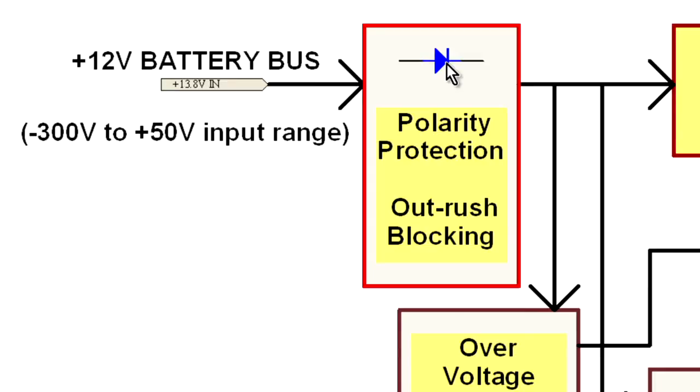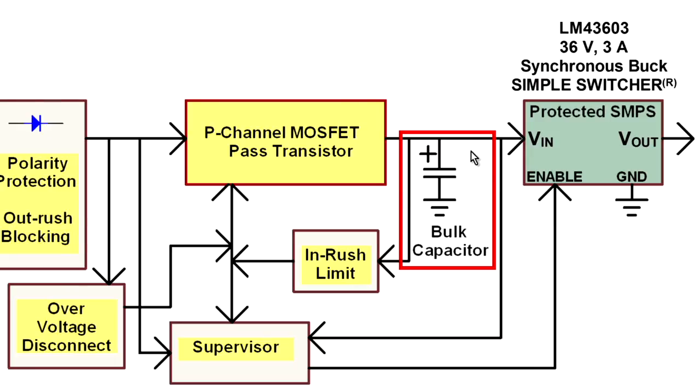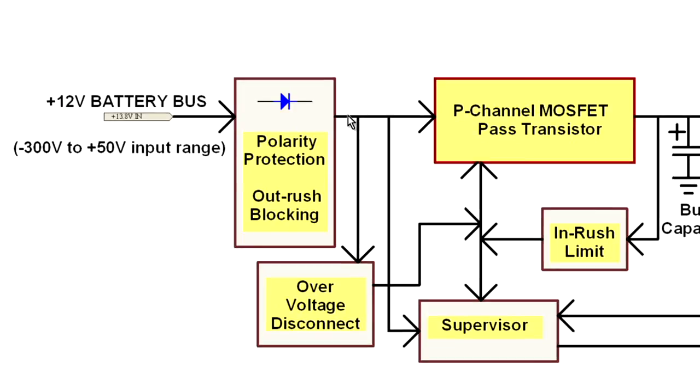The battery bus is here on the left-hand side, and the first device in the application circuit is a polarity guard diode. Now, this is a fast-recovery silicon diode, and it provides polarity protection, of course, but in addition, it's got outrush protection so that the charged capacitor that sits over here at the input to the 43603 is prevented from discharging out the input in the event somebody shorts the bus.